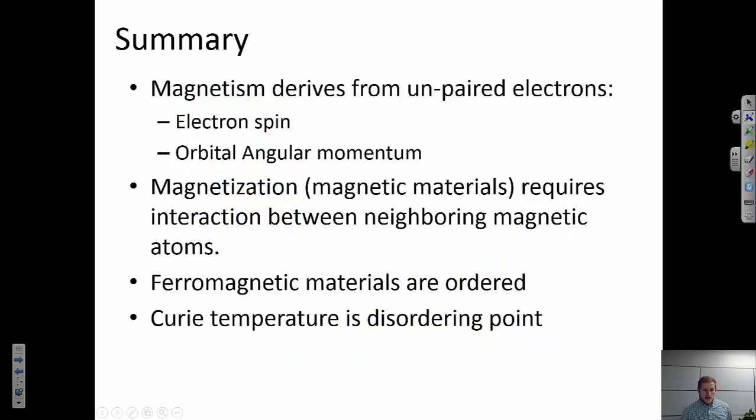Okay, so in summary, magnetism derives from unpaired electrons, and there are two contributions: electron spin and orbital angular momentum contribution. These two things can interact and can lead up to the magnetic moment on a given atom or on a given ion.